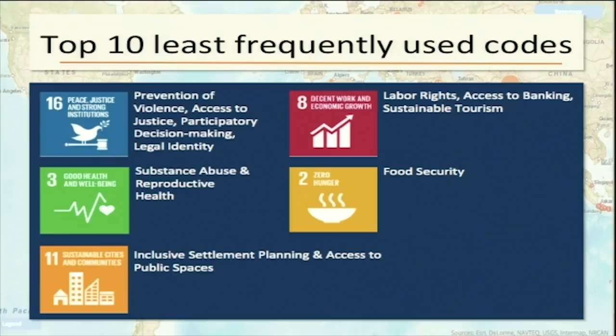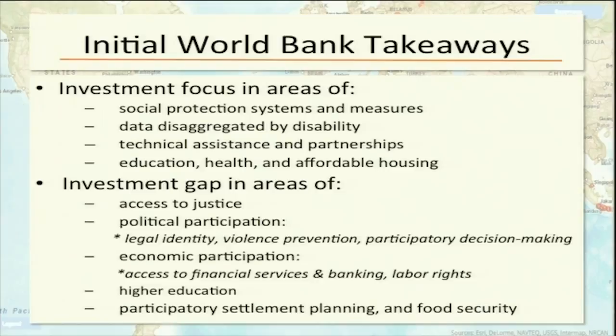The top ten least frequently used codes fell under five different SDG goals: SDG 16 — prevention of violence, access to justice, and participatory decision making; SDG 3 — substance abuse and reproductive health; SDG 11 — inclusive settlement planning and access to public spaces; SDG 8 — labor rights, access to banking, sustainable tourism; and SDG 2 — food security. These all had one or fewer codes.